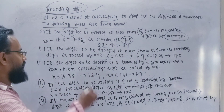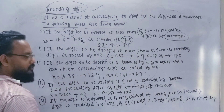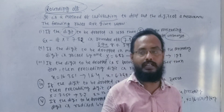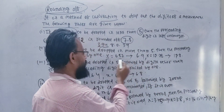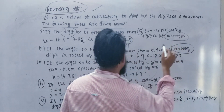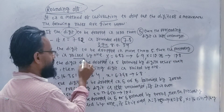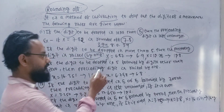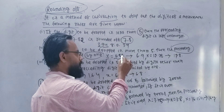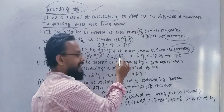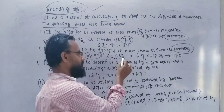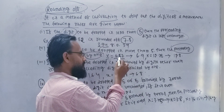Rule 2: If the digit to be dropped is more than 5, then the preceding digit is raised by 1. For example, if the digit is 7 — since 7 is greater than 5, the preceding digit is raised by 1. So if the preceding digit was 5, it becomes 6.